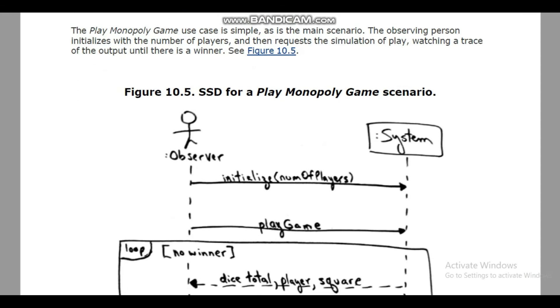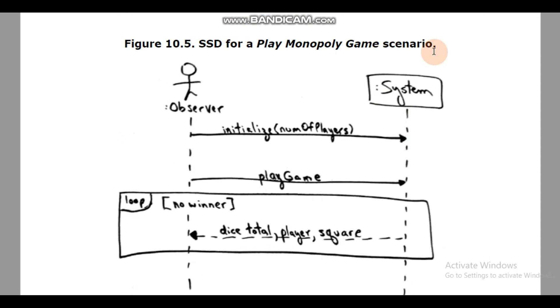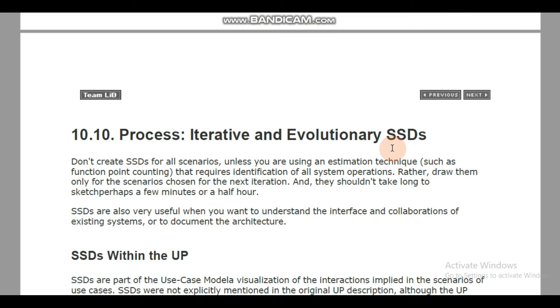Let's see Figure 10.5 - system sequence diagram for a play Monopoly game scenario. This is a particular scenario, not a complete use case diagram representing all scenarios. Here we have a player and a system. It is initialized with parameter number of players, then message to play a game with loop no winner. Dice total and player square are a few things which are in response returned to the system, and when will it be no winner - this is the condition we are having here.